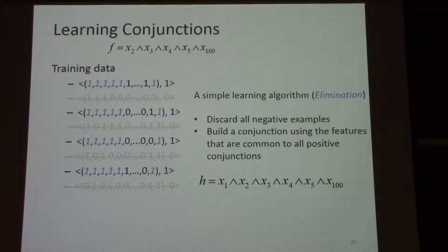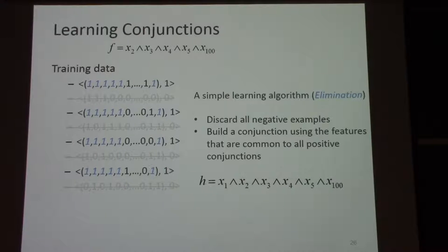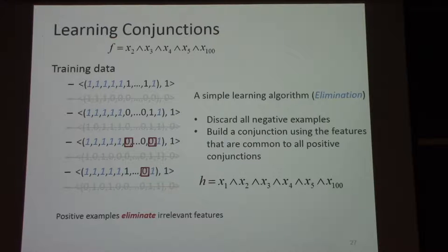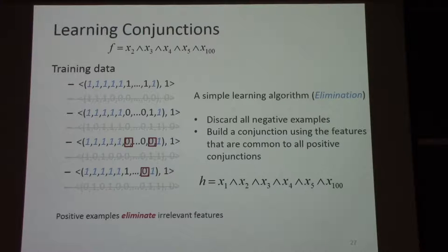Step 2: we will look at all the features that are common to all positive examples — highlighted in blue: x1, x2, x3, x4, x5, and x100. Basically what we are saying is the output is 1 if x1 and x2 and x3 and x4 and x5 and x100 are present; otherwise the output is 0. That gives us function h. The reason this algorithm is called 'elimination' is because positive examples eliminate irrelevant features — every feature with a value of 0 in a positive example gets thrown out, and whatever is left behind, we put an AND between them. Does this algorithm make sense?